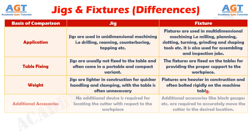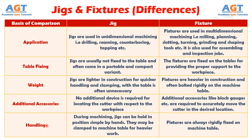If we differentiate them based on requirement for additional accessories, no additional device is required for locating the cutter with respect to the workpiece in jigs, whereas additional accessories like block gauges etc. are required to accurately move the cutter to the desired location in fixtures. Based on how they are handled, jigs can be held in position simply by hands during machining, and may be clamped to the machine table for heavier work, whereas fixtures are always rigidly fixed on the machine table.